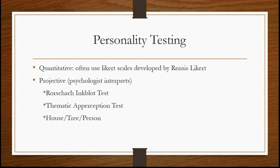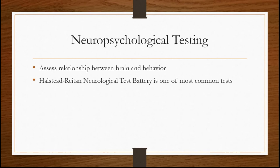The third type of psychological testing I wanted to mention is neuropsychological testing, which is testing done to assess the relationship between the brain and behavior. Sometimes there can be abnormalities in the physiological structure of the brain that affect behavior — for example, people who've experienced a traumatic brain injury often have drastic personality and behavioral changes related to a physiological change in the brain. The Halstead-Reitan neuropsychological test battery is probably the most common of the neuropsychological tests.